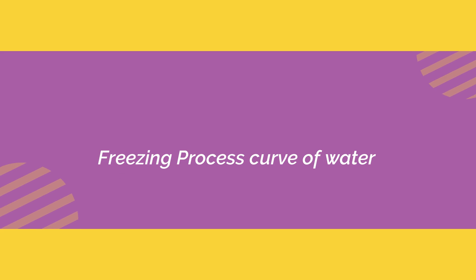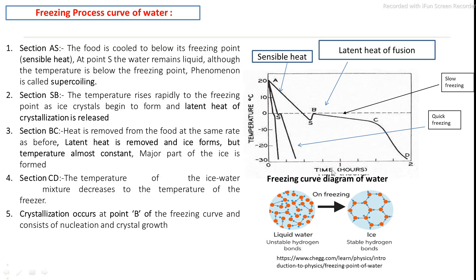The freezing curve diagram shows temperature versus time required for the freezing process. There are two main graphs: slow freezing, which requires more time, and quick freezing. Initially, suppose the food temperature is 20 degrees Celsius. The sensible heat is first removed, and its temperature decreases toward the freezing point of pure water at 0 degrees Celsius.